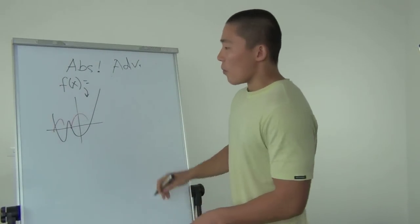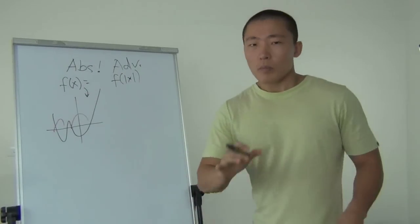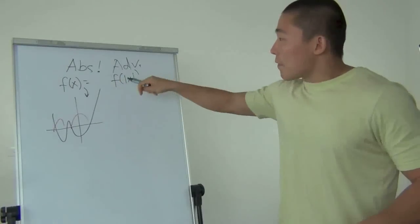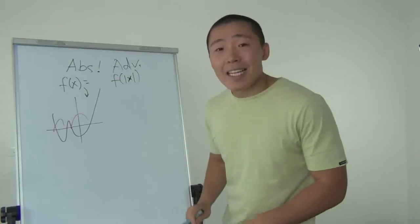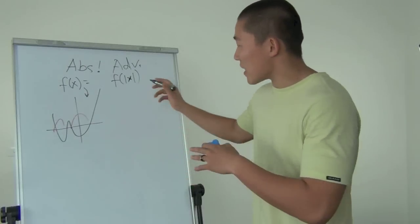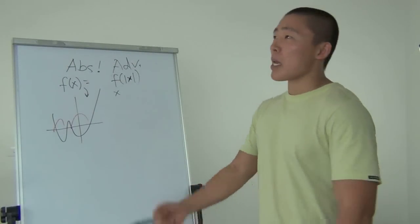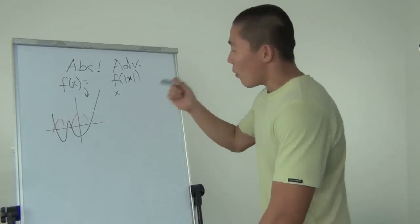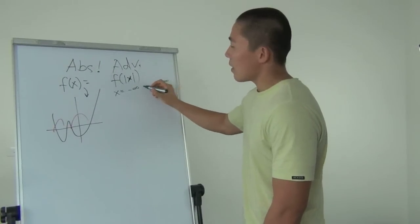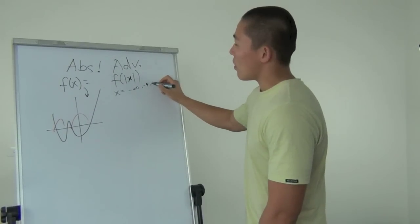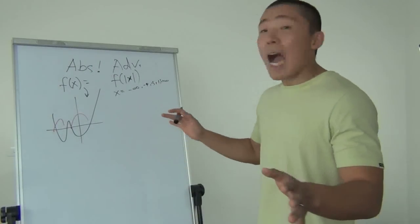Think about this: f of absolute x. Everything about x has to be positive now. Everything has to be positive inside x. What could x be originally? X could be any numbers from negative infinity all the way to positive infinity, maybe negative 4, negative 3, 1, 2, all those numbers.